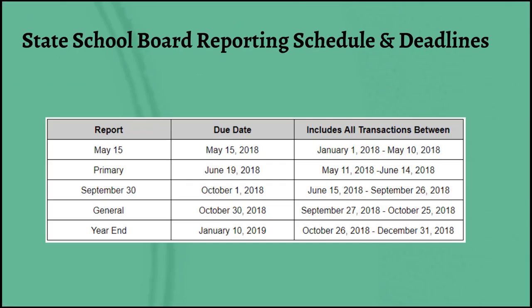State school board candidates and officeholders have essentially the same reporting deadlines, except that the convention report is replaced by a May 15th report. Because state school board is nonpartisan, they don't have a convention, so it is just that May 15th deadline. Everything else is exactly the same.